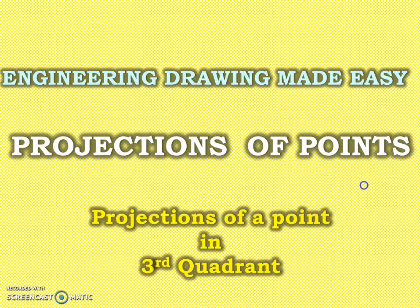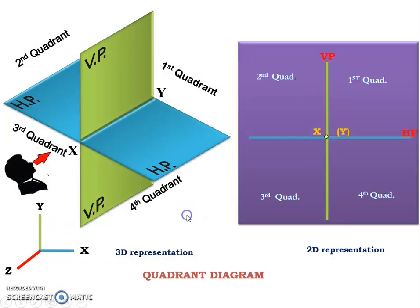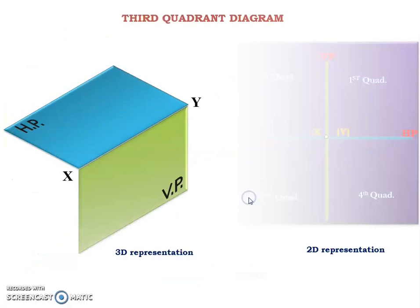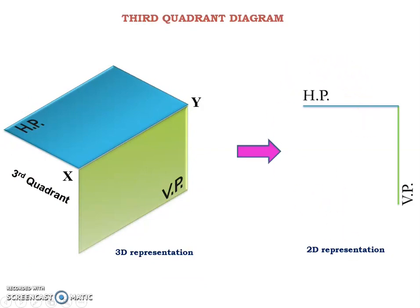Hello friends, in this video I am going to explain the projections of a point located in the third quadrant. First let us recollect the fundamentals and then move on to the problems. Here you can see the 3D representation of the quadrant diagram and the same diagram can be represented in 2D like this. Now you can see the 3D representation of the third quadrant diagram and the same diagram can be represented in 2D like this.